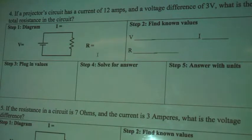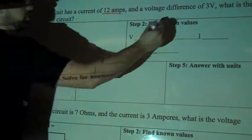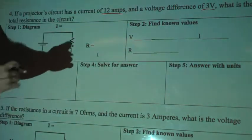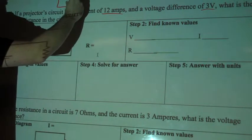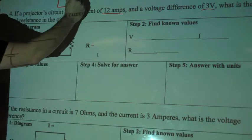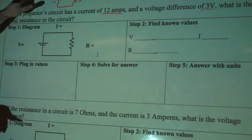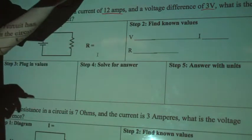So if a projector's circuit has a current of 12 amps and a voltage difference of 3 volts, voltage difference just so we're clear, that means that from a battery, the difference between the positive and the negative is 3 volts, and that's actually the speed or how much those electrons want to get to the other side of the battery.